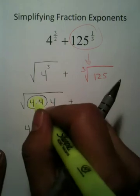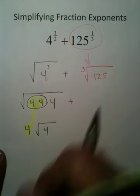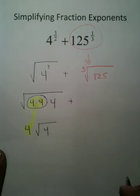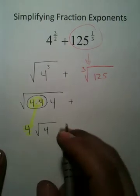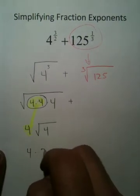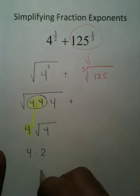So, these turn into this. Well, you know what the square root of 4 is. It's 2, which leaves you with 8.